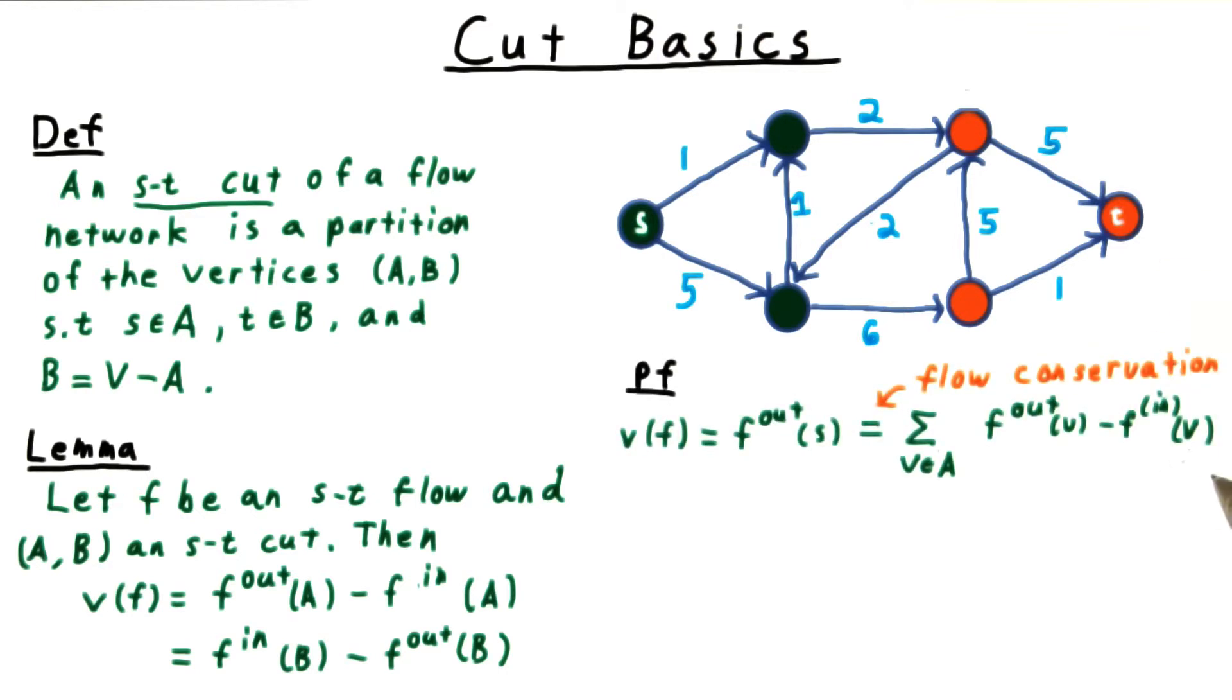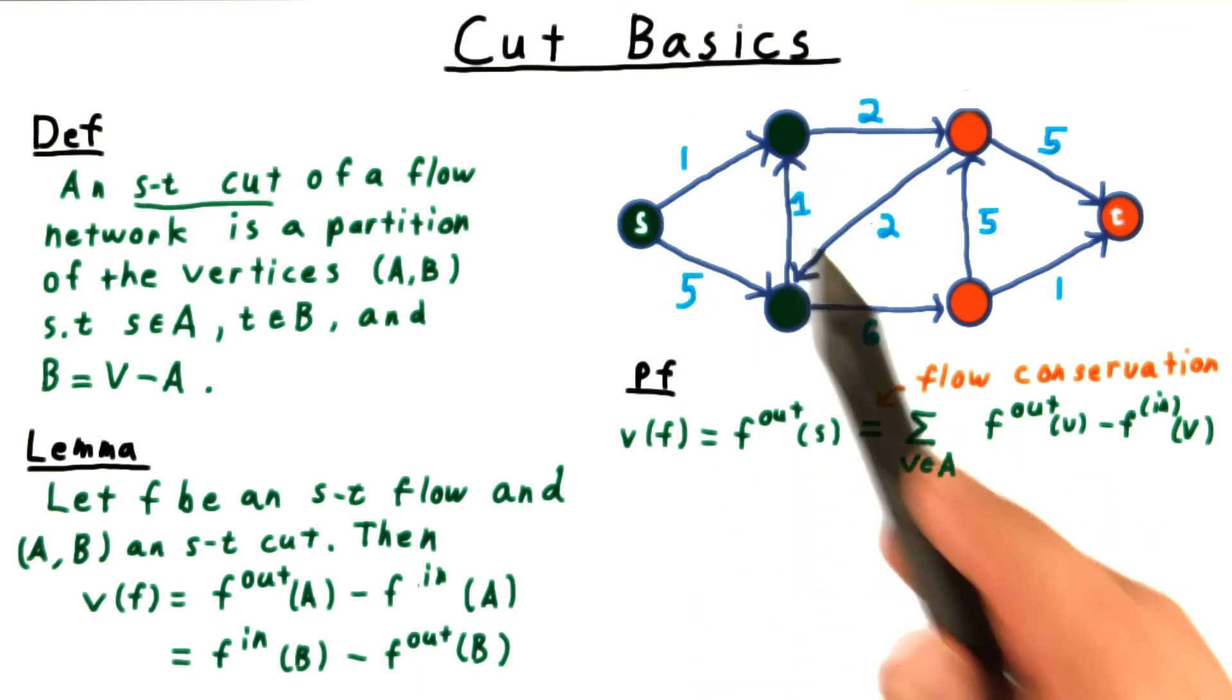As you might imagine, the proof comes from the conservation of flow. We start with the definition of flow, and then add 0 in the form of the conservation equations for each node in the A part of the partition.